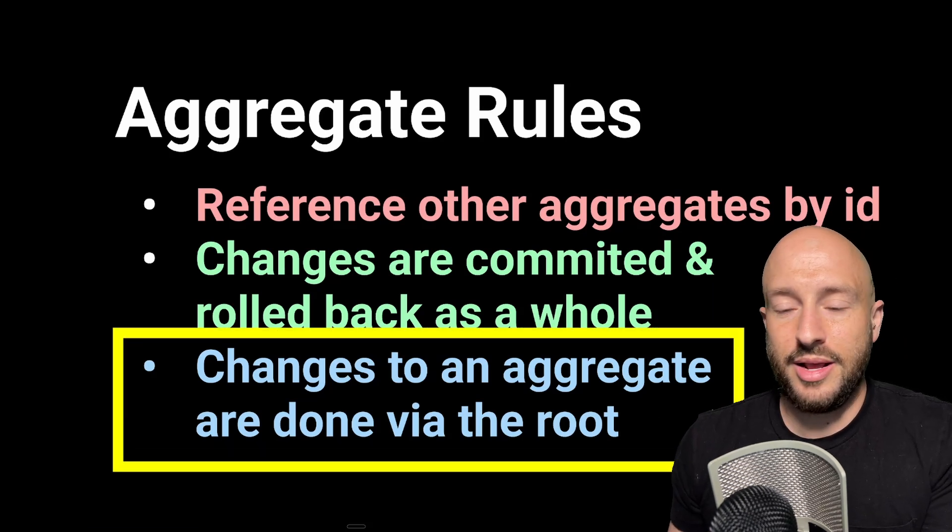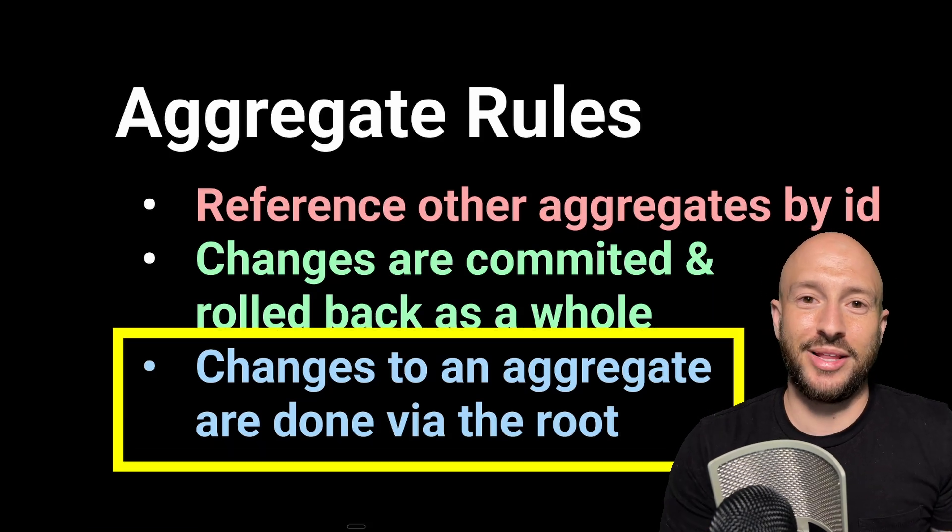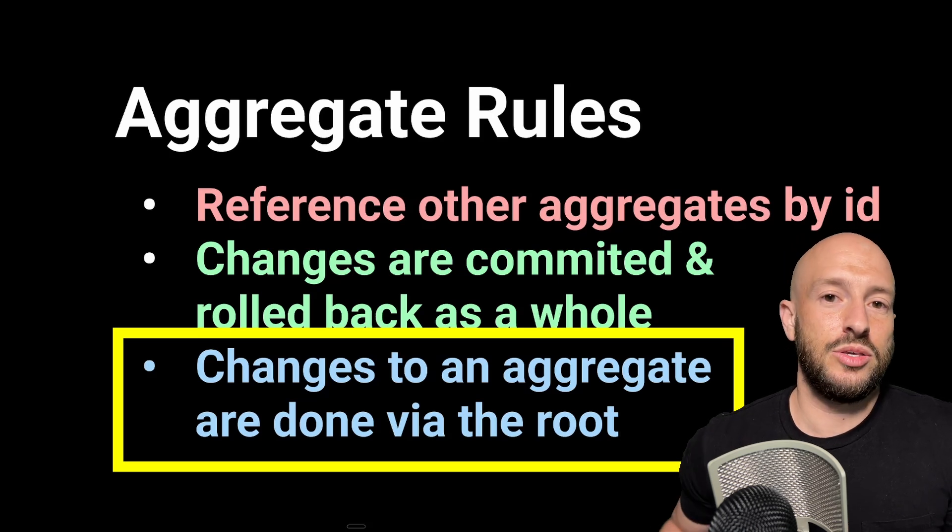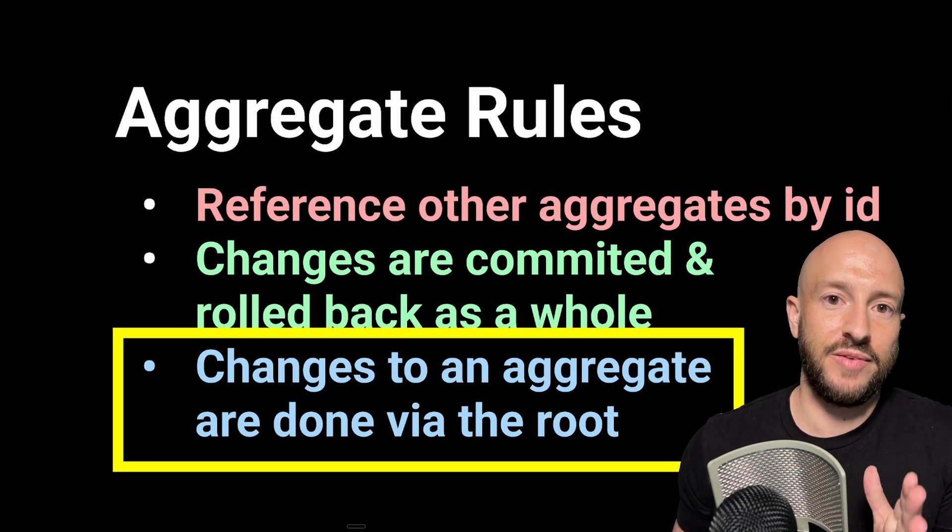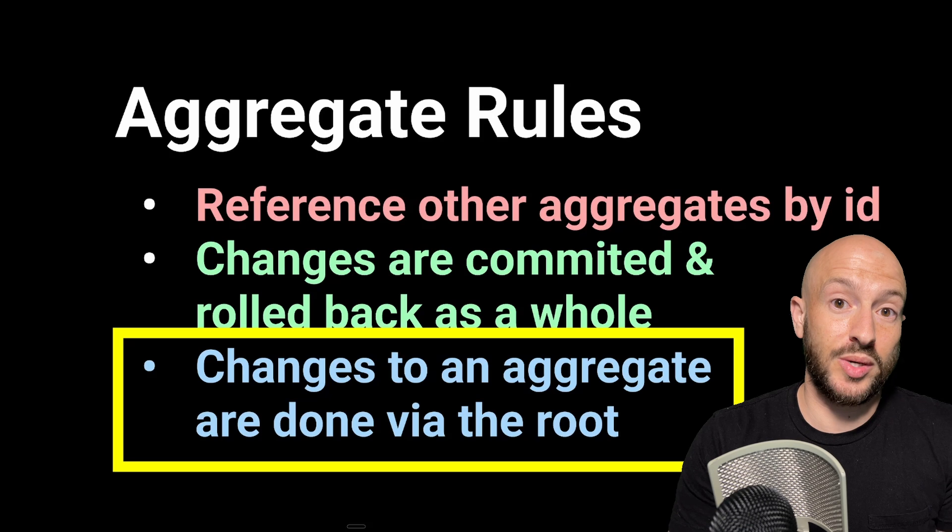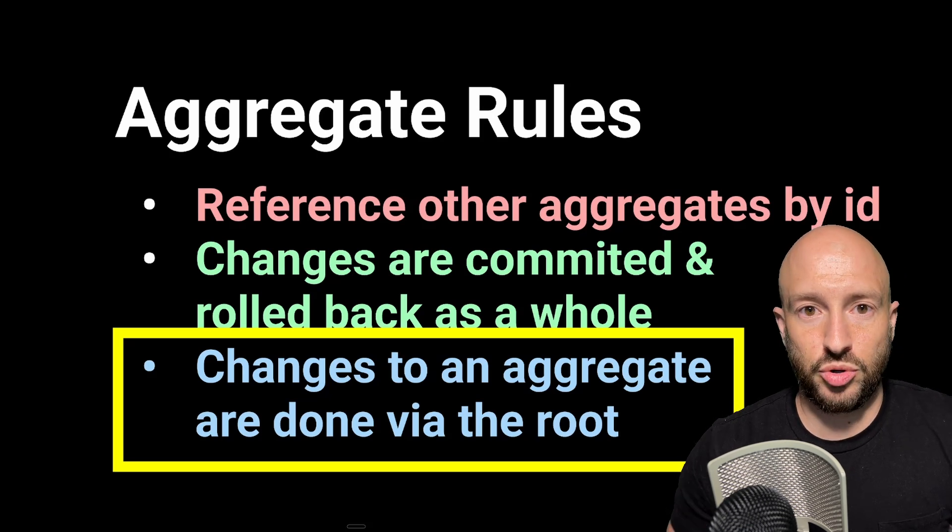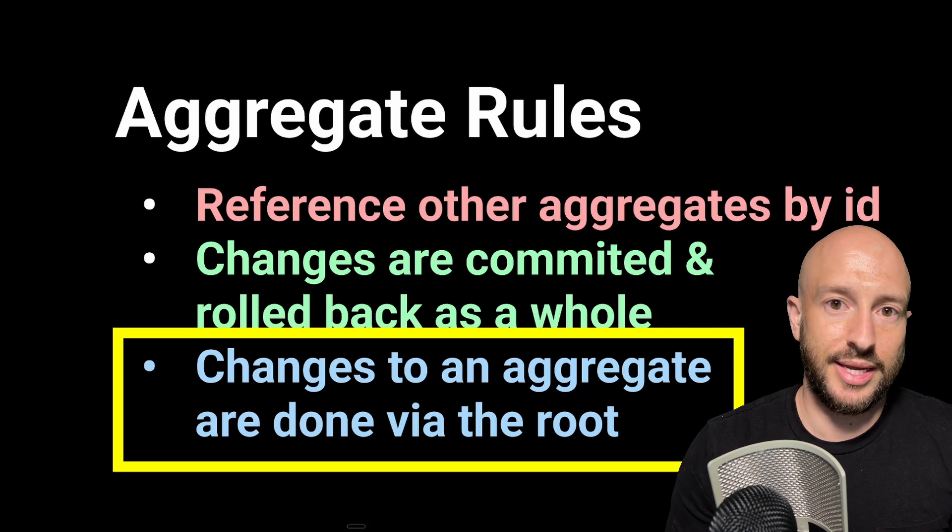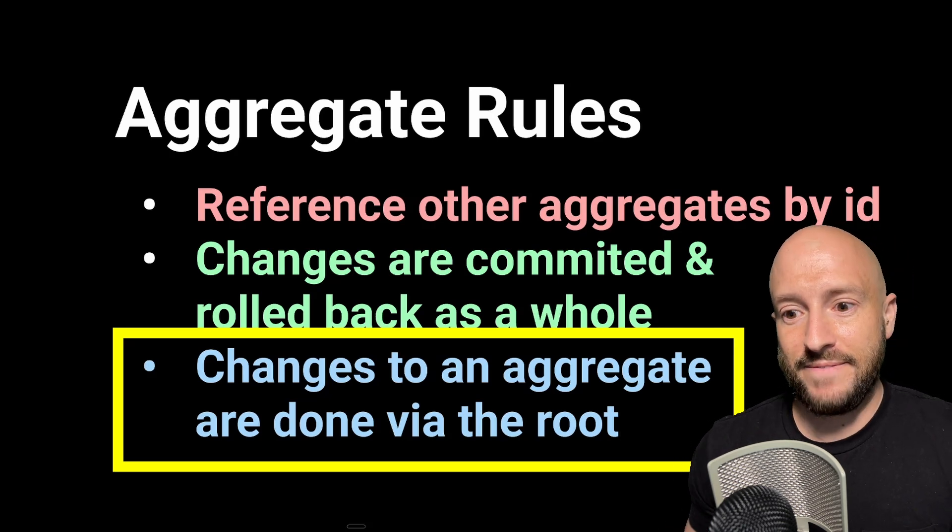The last one, this is a rule that is more like a soft rule, you need to be pragmatic about it. But basically, any change to the aggregate is done via the aggregate root. And this is so it can enforce the invariance. This is similar to the rule that you want to have private setters on your objects, so no one can manipulate them without you validating that the manipulation is valid.